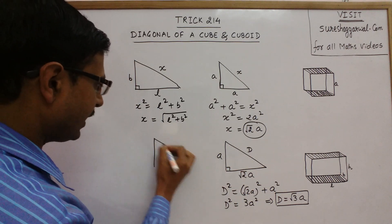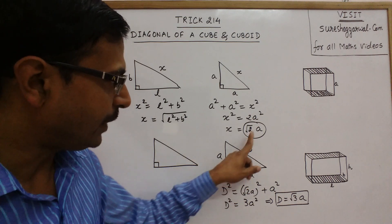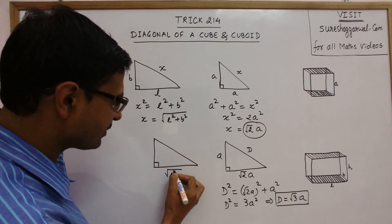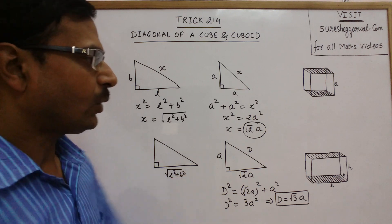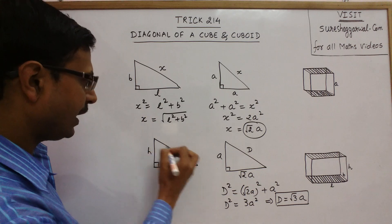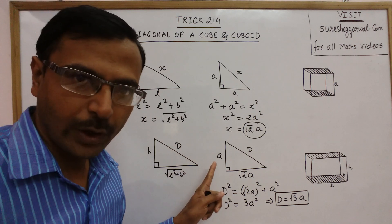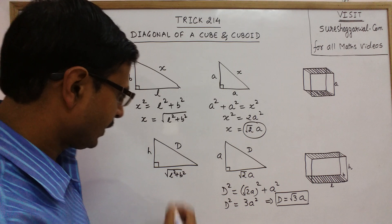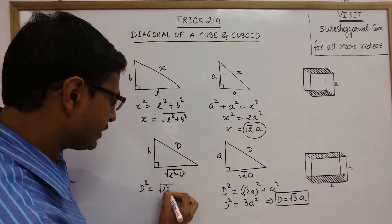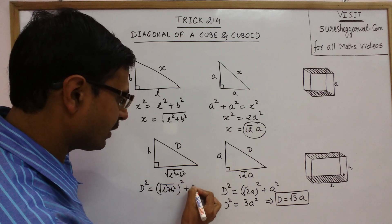Now draw the second right-angled triangle and take the base as √(L² + B²). Now take the third dimension, H, as the perpendicular. And now you will get the diagonal of the cuboid by applying Pythagoras theorem. D² will be equal to (√(L² + B²))² + H².